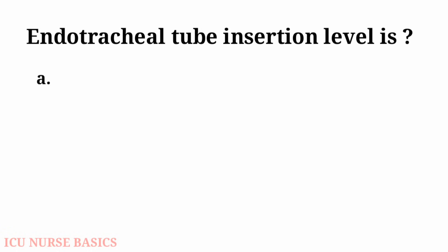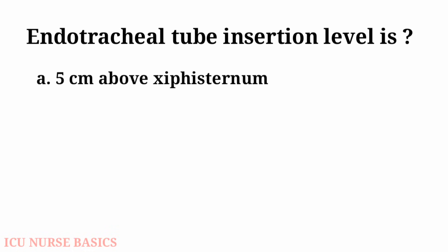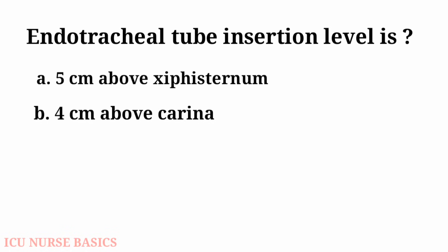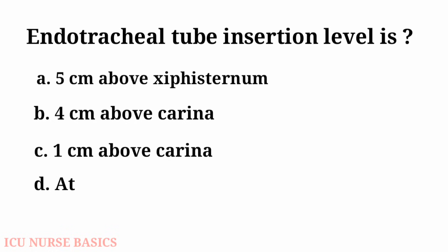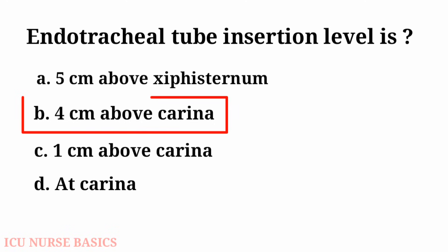Endotracheal tube insertion level is: A. 5 cm above the carina at the sternum, B. 4 cm above the carina, C. 1 cm above the carina, D. At the carina. And the answer is B, 4 cm above the carina.